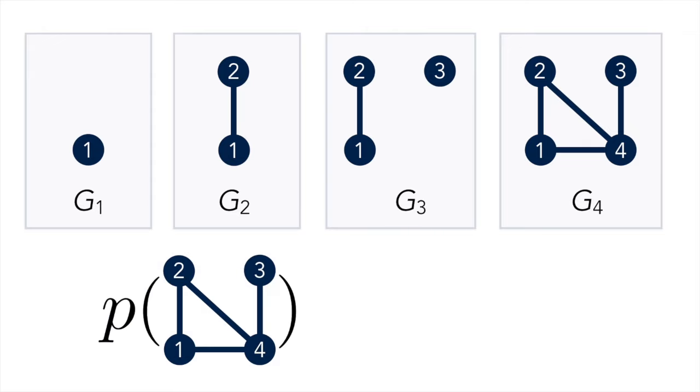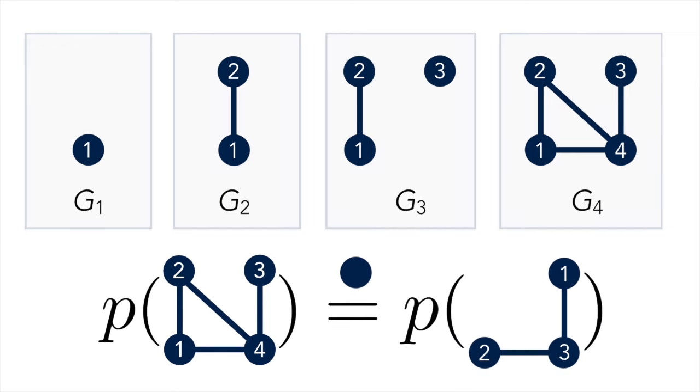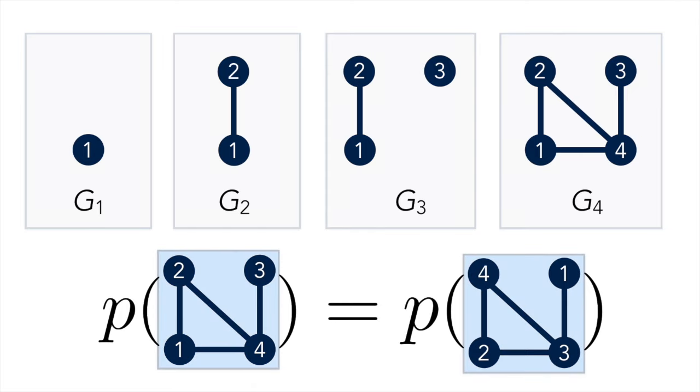The random graph sequence is vertex exchangeable if permuting the order of the vertices doesn't change the distribution of the graph sequence. These two graphs are the same except the vertex labels are permuted and, under vertex exchangeability, they have the same probability.